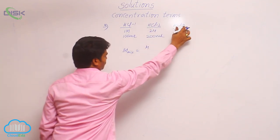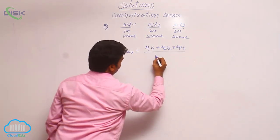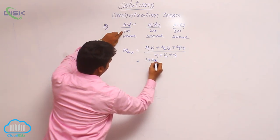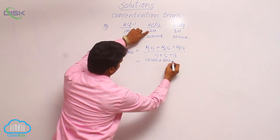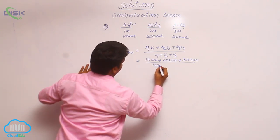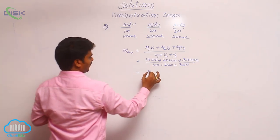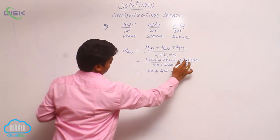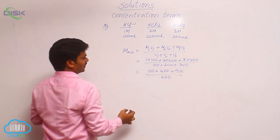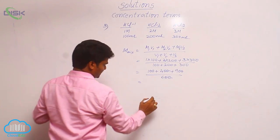If the solutes are same or similar, then what is the formula for molarity of the mixture? We have three components total. That is why the formula is: M1V1 + M2V2 + M3V3 divided by V1 + V2 + V3. That means 1×100 + 2×200 + 3×300, divided by 100 + 200 + 300. So the numerator terms are 100 + 400 + 900, giving us 1 + 4 + 9 = 14, and denominator is 600.